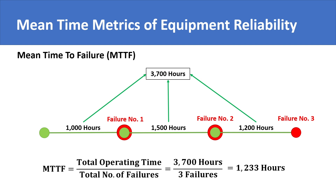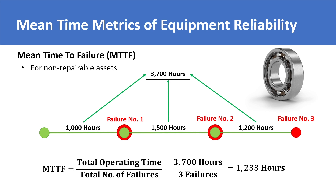Mean time to failure is exactly the same concept as mean time between failures. The only difference is that mean time to failure is for things that are non-repairable, such as a ball bearing. Once they fail, they are replaced. The rest of the concept is the same — wherever we mention the asset was repaired, we say it was replaced.